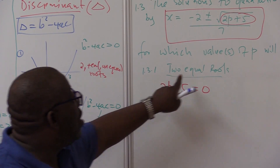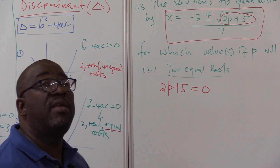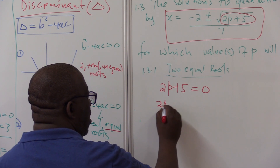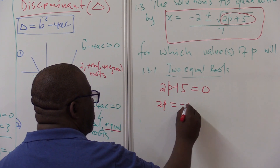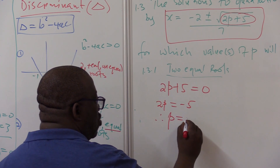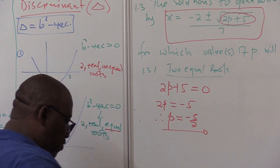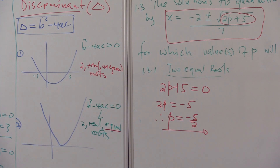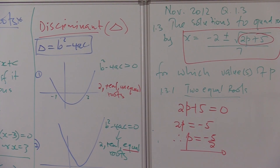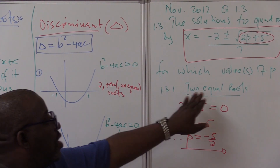We're looking for p. So 2p equals minus 5, therefore p equals minus 5 over 2. That's how easy this section is — the nature of roots. All that you need to think of is just these three diagrams, and you follow the question. You check your keywords. In this particular case, the keyword was two equal roots.